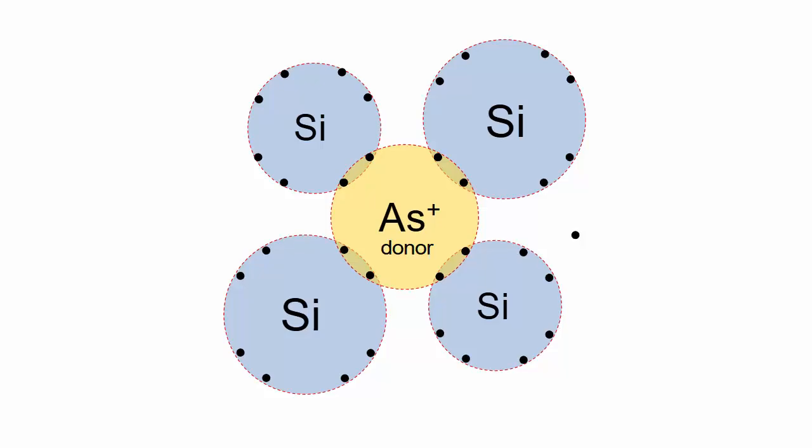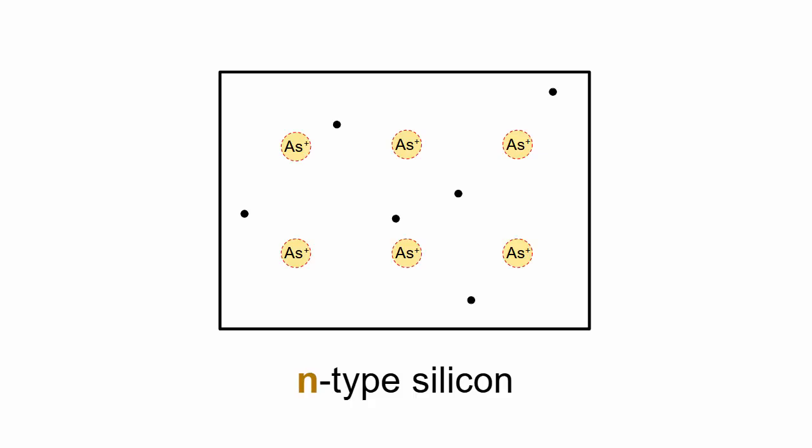Arsenic is called a donor because it donates a mobile electron to the silicon crystal. Silicon with a little bit of arsenic mixed in is called N-type silicon because it contains negatively charged mobile particles that can carry an electric current.